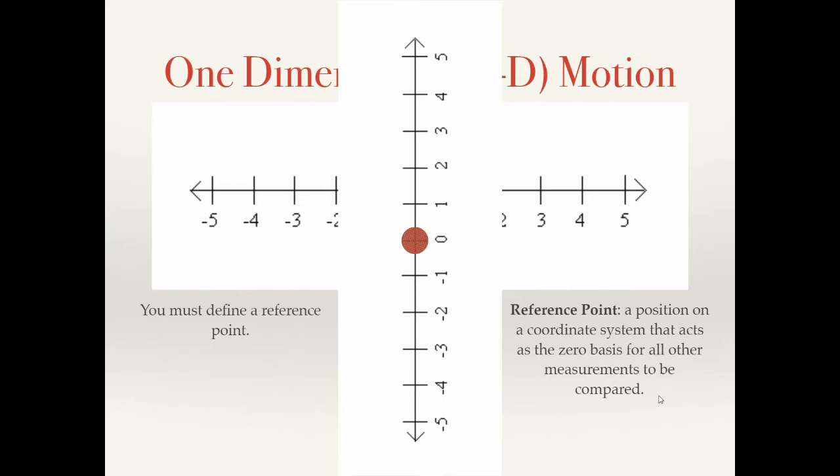But the reference point doesn't need to be at what you call zero. The reference point can be anywhere. I can reference all my measurements with respect to this red dot down here instead of this one. So that's what is known as a reference point, and nothing makes sense unless you have one. All of your measurements make no sense unless they are thought of as with respect to some reference point.